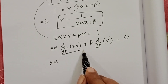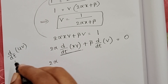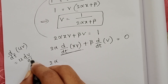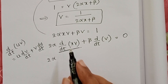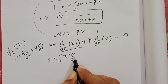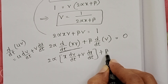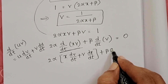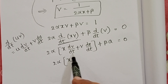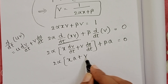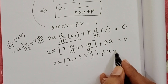Here we use the differentiation of a product of two terms: d/dt(uv) = u·(dv/dt) + v·(du/dt). Applying this: 2α[x·(dv/dt) + v·(dx/dt)] + β·(dv/dt). Since rate of change of velocity is acceleration, substitute dv/dt = a and dx/dt = v: 2α(xa + v·v) + βa = 0, giving 2αxa + 2αv² + βa = 0.